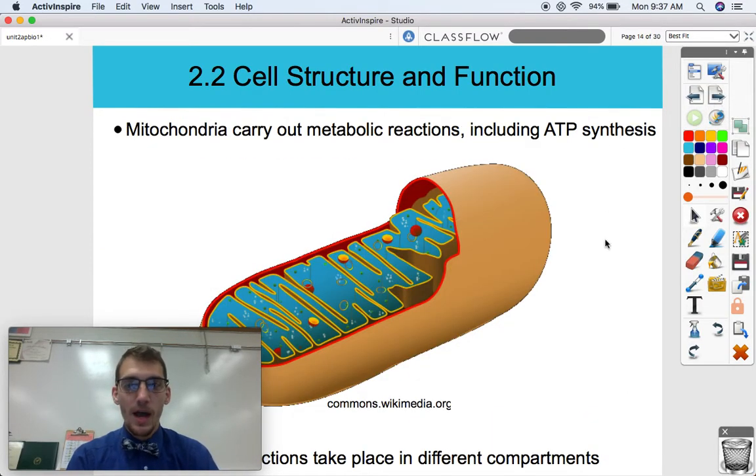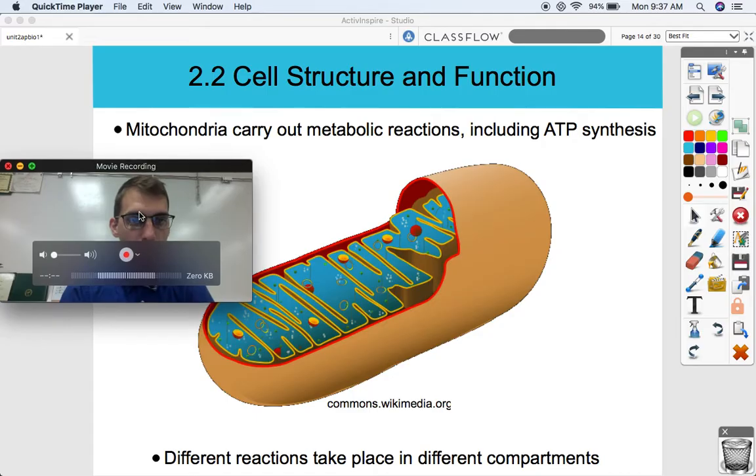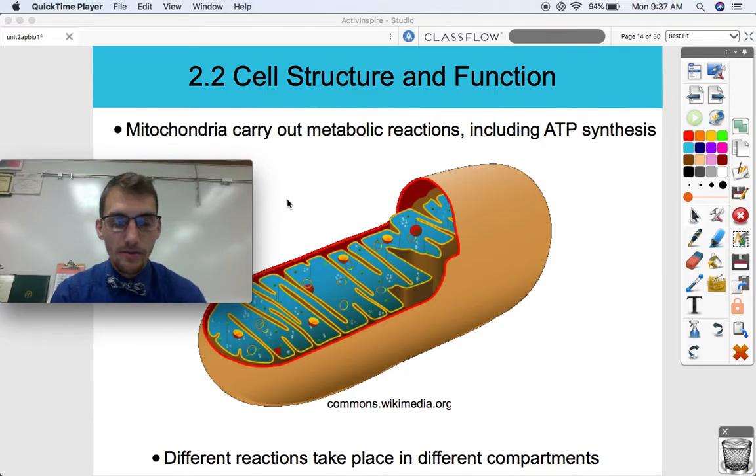All right, so the two main organelles that we're going to get into today and the structure and function of each are the mitochondria and the chloroplast. And the reason why we're getting into those two is because in our third unit, we are discussing more extensively the processes that go on within these organelles, because they're key components of metabolism.